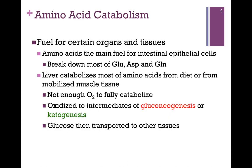Amino acids are fuel for certain organs and tissues on a regular basis. For instance, it's the main fuel for intestinal epithelial cells. That's where we break down most of our glutamate, aspartate, and glutamine. The liver catabolizes most of the amino acids from our diet or from mobilized muscle tissue in the case of starvation.